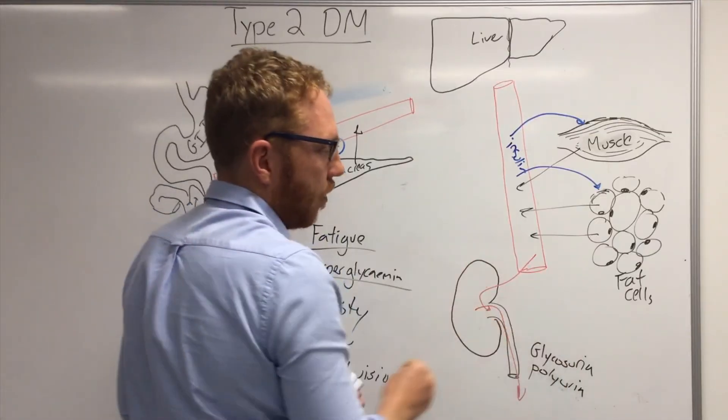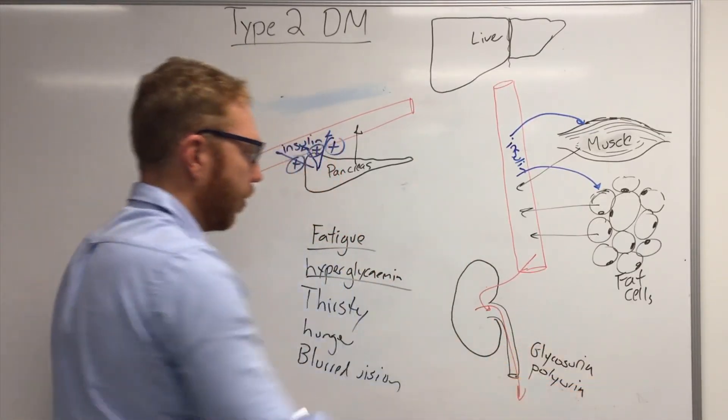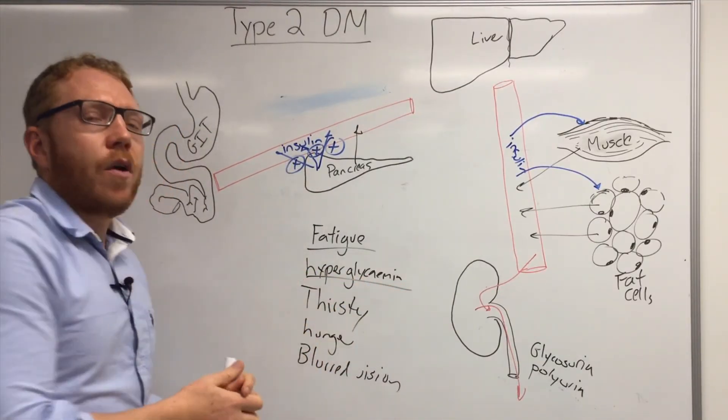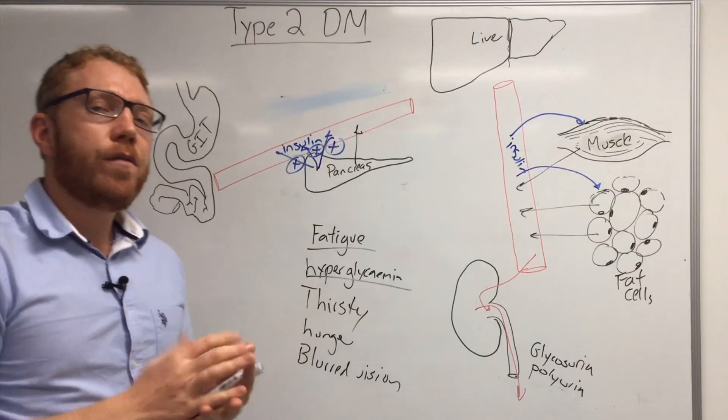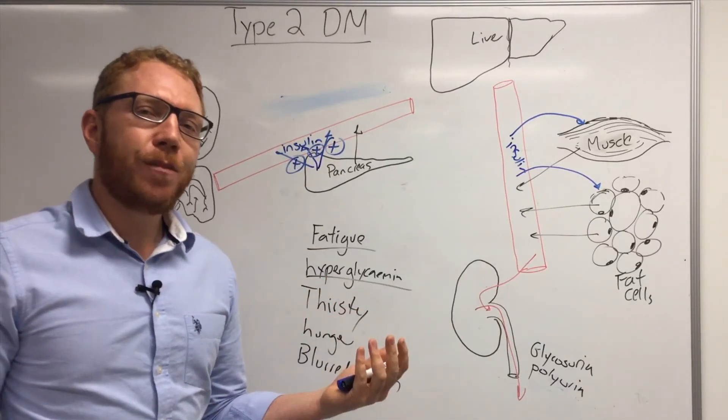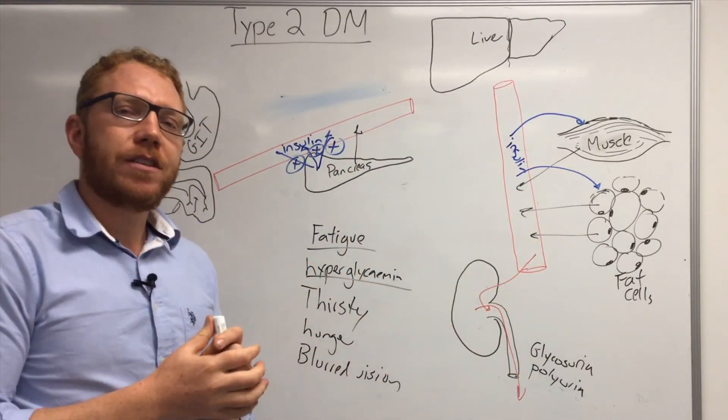And then we start to get the signs and symptoms with being tired and fatigued, glycosuria, polyuria, hyperglycemia, which will then bring on these. So hopefully that has given you a quick overview of the disease type 2 diabetes, and how the clinical manifestations come about based on its disease.